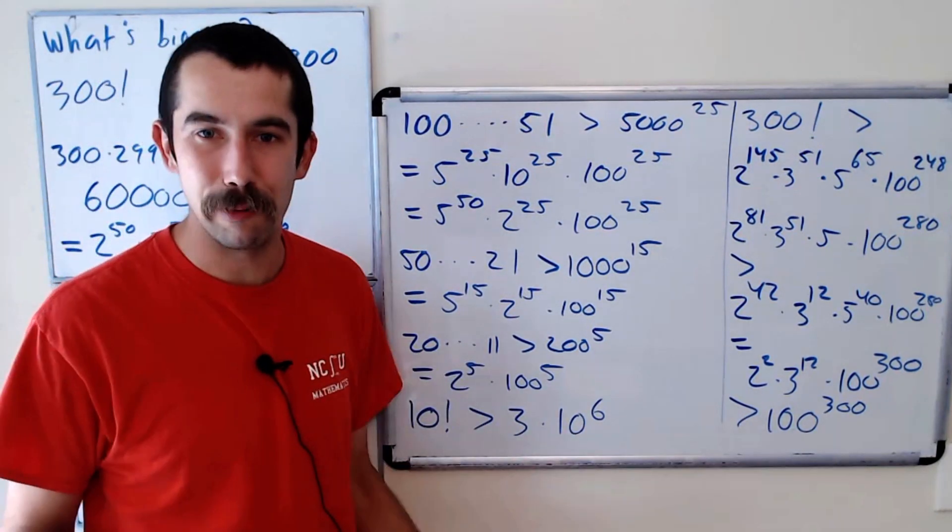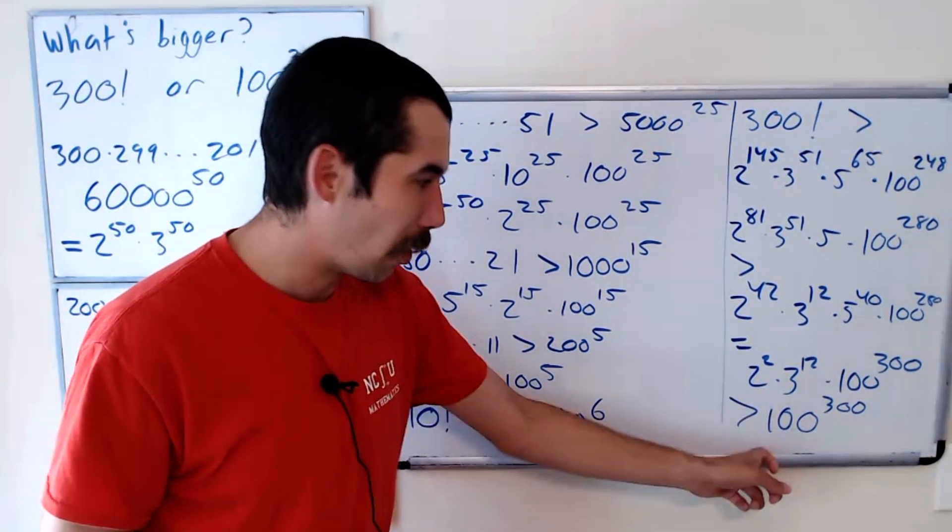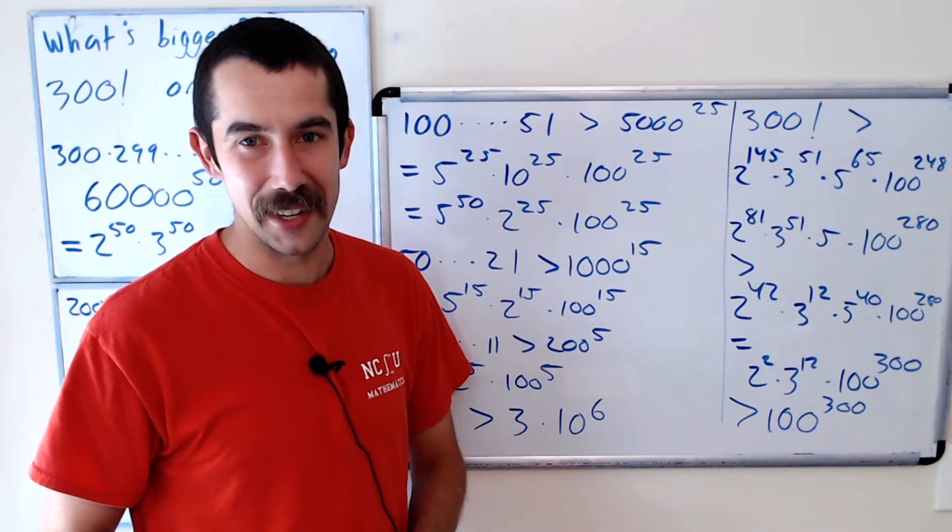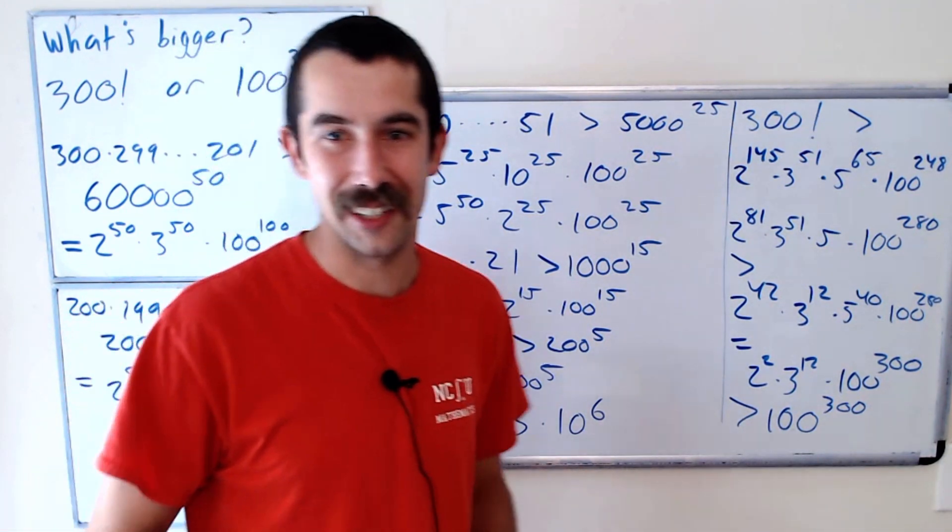Okay, so there's the proof that 300 factorial is greater than 100 to the 300. Tomorrow, I'll show you how to prove this in under one minute. So keep your eyes open for that. All right, thanks for watching. See you later.